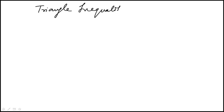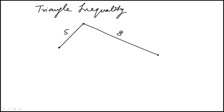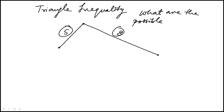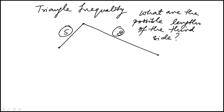The other concept is called the triangle inequality. If you're given two sides of a triangle — say one side is 5 and the other is 8 — what are the possible lengths of the third side? Could it be 15? Could it be 2? Could it be 0?